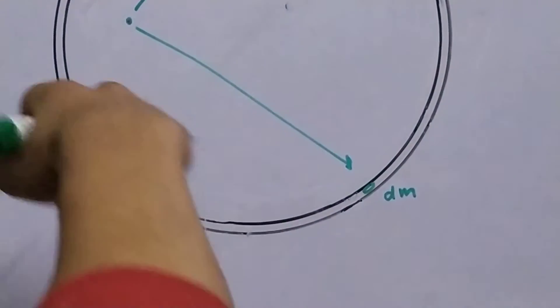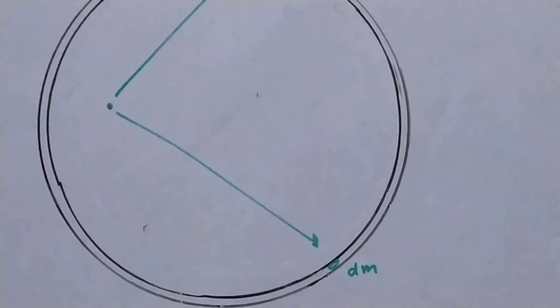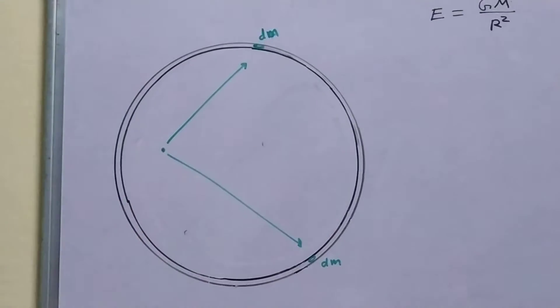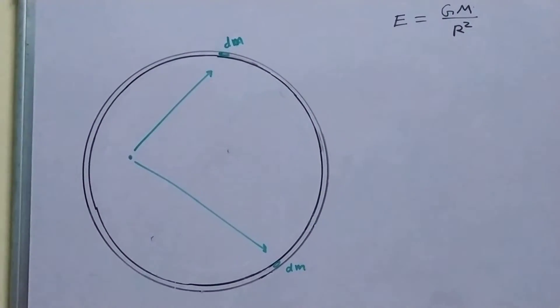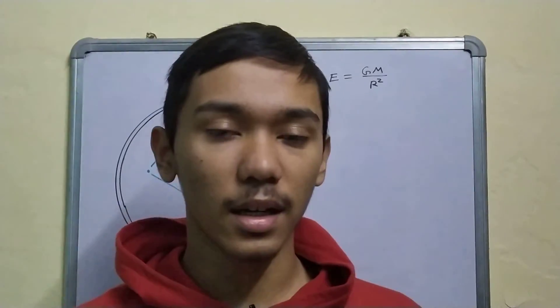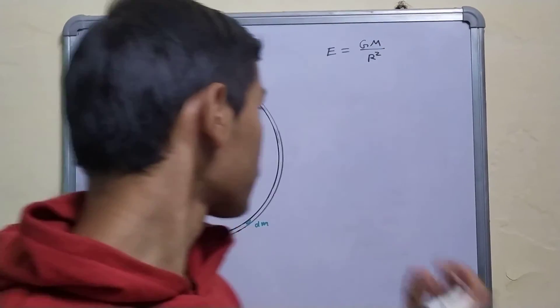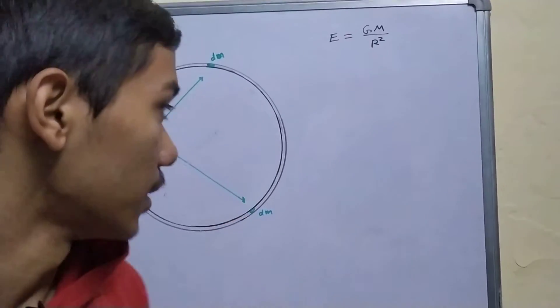And now we have to sum over all these, all such fields. Now, this might be very complicated, but we will use symmetries and symmetrical arguments to make our calculations very easy.